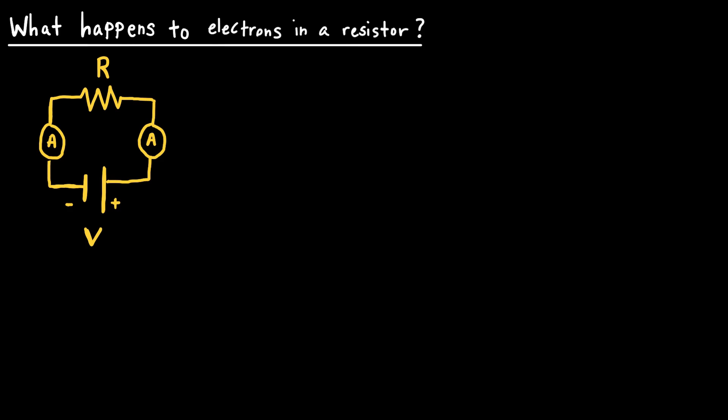In this video I'd like to address the question: what happens to electrons in a resistor, and more specifically I'd like to address the misconception that when charge moves through a resistor it slows down. To provide some context, let's look at the circuit I've drawn: there's a battery with voltage V, a resistor with resistance R, and two ammeters. These four elements create a series circuit — a single loop with one path for current to flow. Because there's only one path, the current everywhere in this circuit is the same. Let's say that current is equal to I, and everywhere the conventional current flows in this direction with a constant value of I.